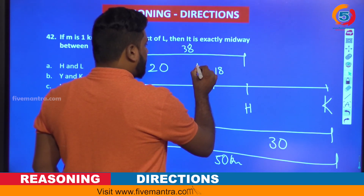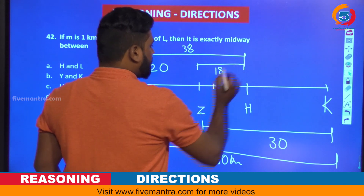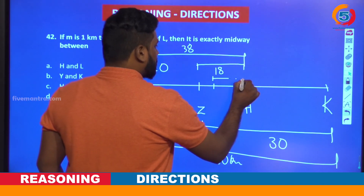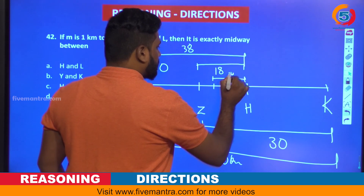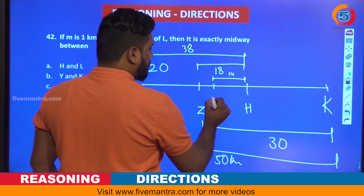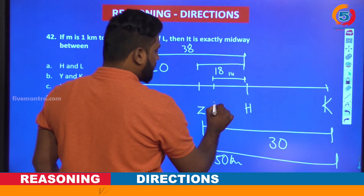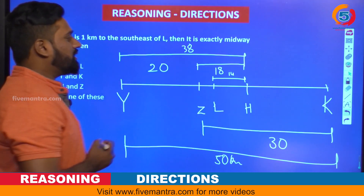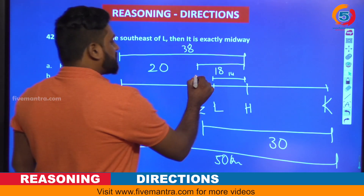This 18 is from here to here — 18. And this is 40 from here to here — you have 40. That is H, and that is L given here. This is the exact diagram.